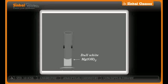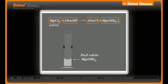Now let us balance this equation. Balancing means the number of atoms on the reactant side and the product side should be equal. Consider the example: MgCl₂ has one Mg on the reactant side and there is one Mg on the product side, so the number of magnesium atoms is balanced on both sides.